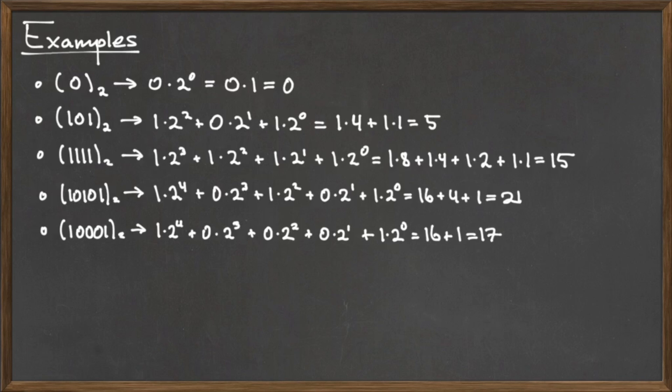The number 10101 in base 2 is the base 10 number 21, and the number 100001 in base 2 is the base 10 number 17.